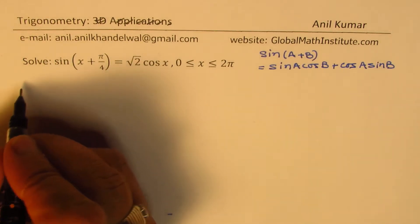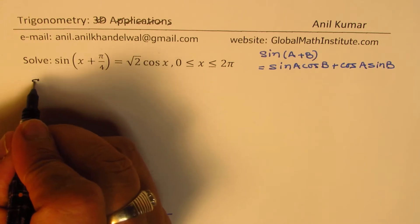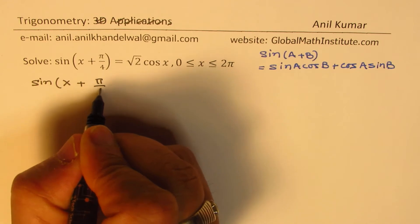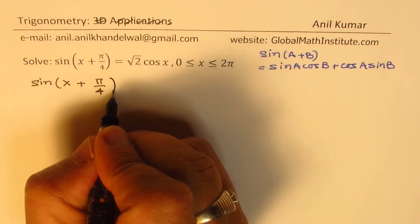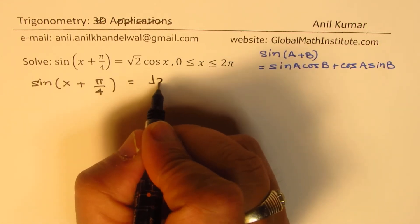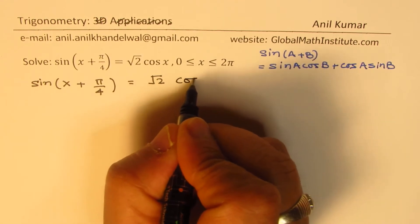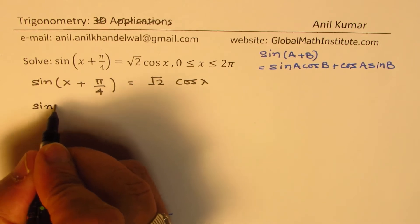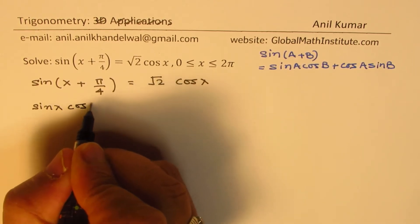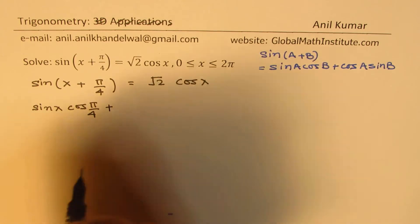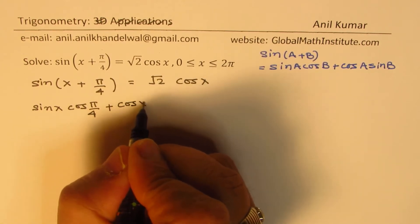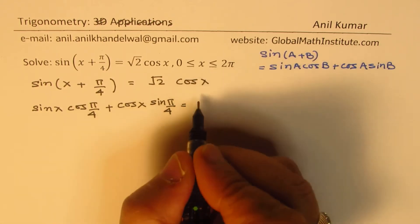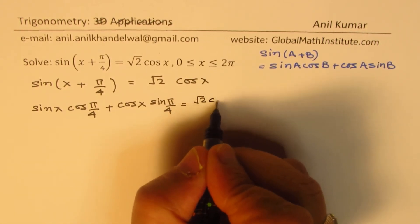So let us expand. Let me rewrite the equation first: sin(x + π/4) = √2 cos x. Expanding the left side, we get sin x cos(π/4) + cos x sin(π/4) = √2 cos x.